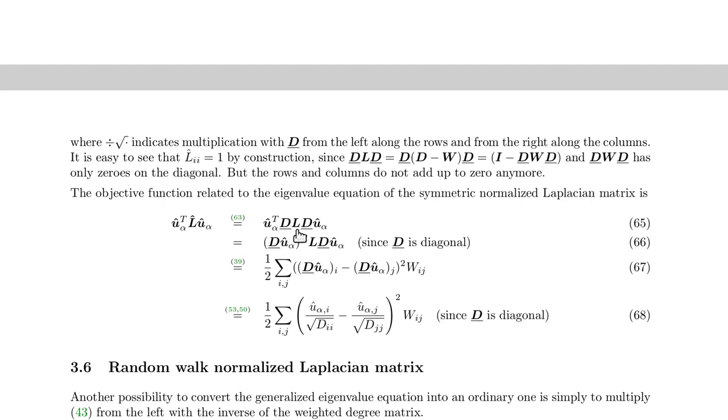We simply replace our L hat matrix by D underscore L D underscore. Then we arrange things a little bit. And since D is a diagonal matrix, the transpose is the same as the matrix itself, which is why we can do this here. So we see, okay, and then we use our equation 39 from above which relates...